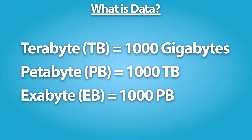10 terabytes could contain the entire printed section of the Library of Congress. A petabyte is 1,000 terabytes, which is about 20 million four-door filing cabinets, or 500 million floppy disks. An exabyte is 1,000 petabytes. Five exabytes would equal all of the words ever spoken by mankind.